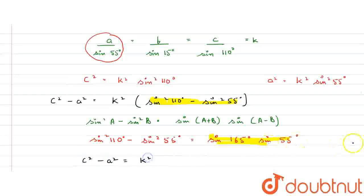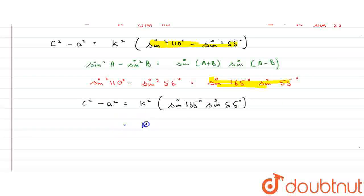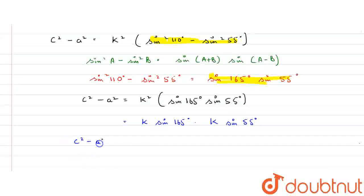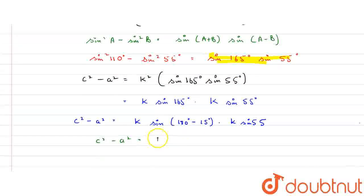So C squared minus A squared equals K squared times sine 165 degrees times sine 55 degrees. This can be rewritten as K times sine 165 degrees, multiplied by K times sine 55 degrees. Now sine 165 degrees equals sine(180−15) degrees equals sine 15 degrees. So C squared minus A squared equals K sine 15 degrees times K sine 55 degrees.